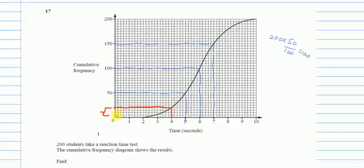So how many took 4 seconds? Is it 5, 10, 20, I mean 5, 10, 15, 20, 25, 30, 35, 40, 50, yes. So every one grid is 5.